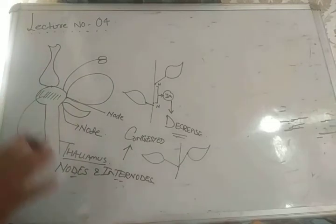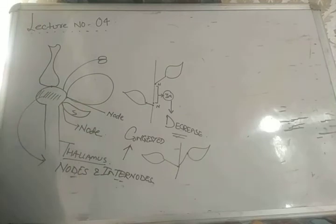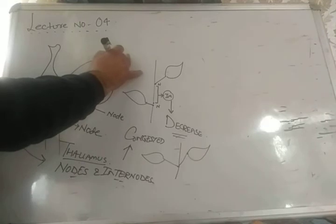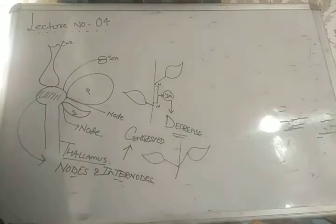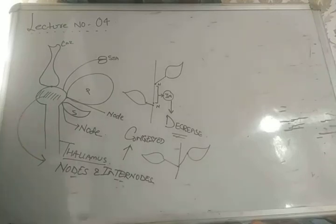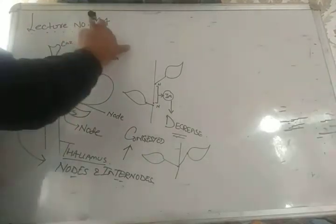Talking about the first whorl, which is called the sepal; the second whorl is called the petal; the third whorl is called the stamen; and the fourth whorl is called the carpel. Remember until twelfth class: the four floral whorls are sepal, petal, stamen, and carpel. I repeat — the four floral whorls are sepal, petal, stamen, and carpel, and they are all modified leaves.